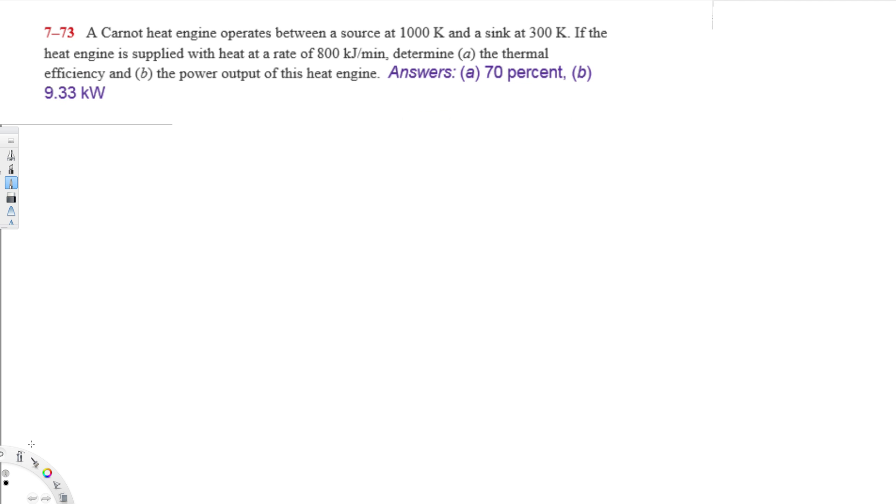Hey, what's going on guys? Let's do this problem right here. The question is asking: A Carnot heat engine operates between a source at 1000 Kelvin and a sink at 300 Kelvin. If the heat engine is supplied with heat at a rate of 800 kilojoules per minute, determine the thermal efficiency and the power output of this heat engine.